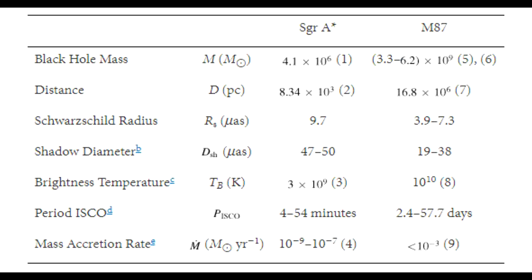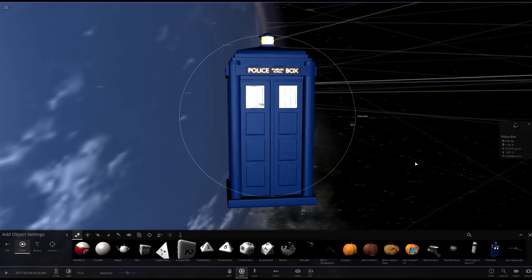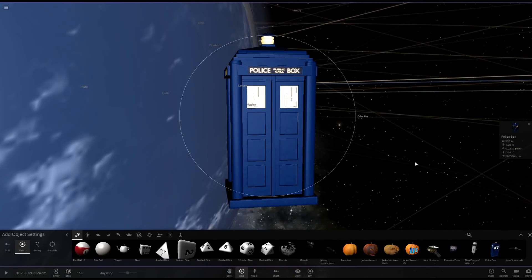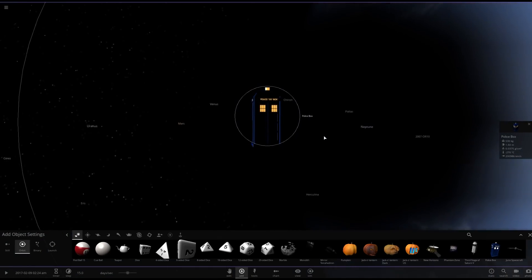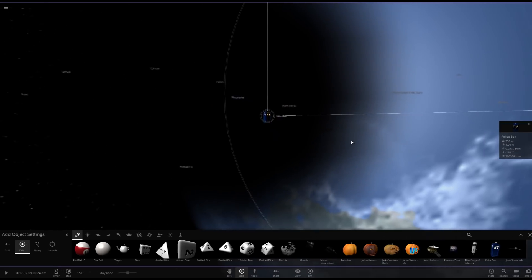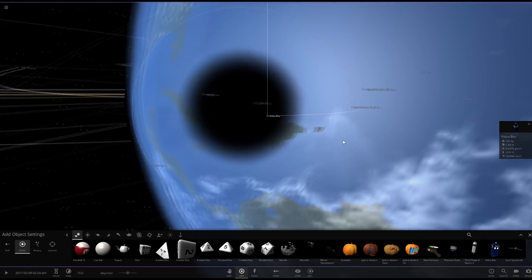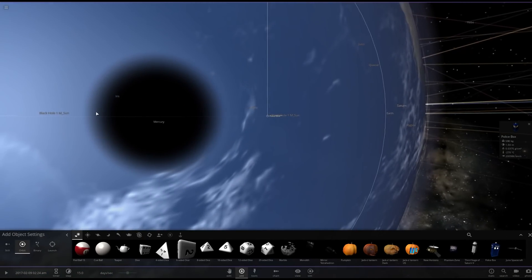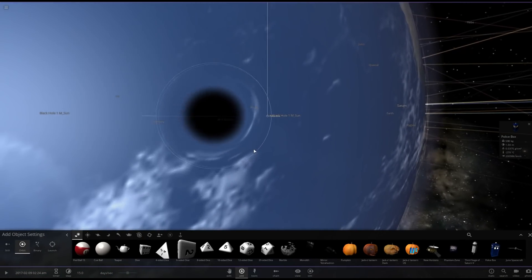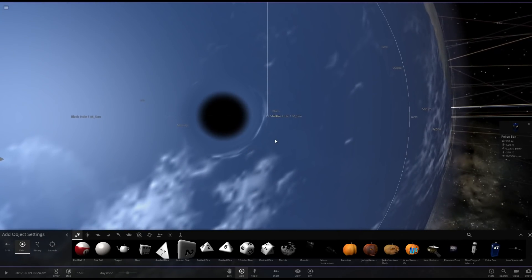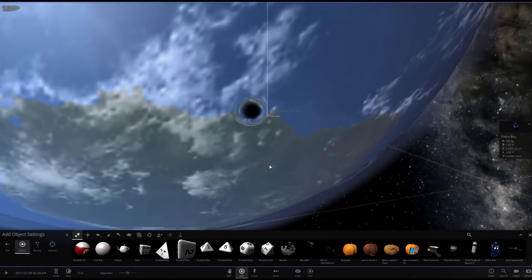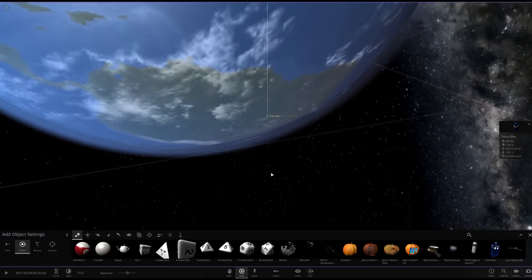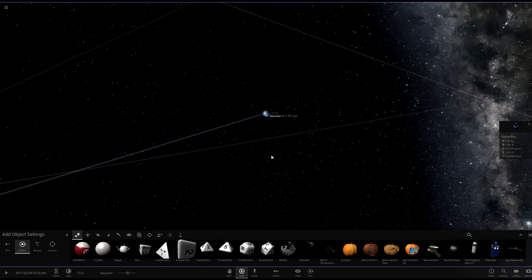To get an idea of how big these black holes are, I can go over to Universe Sandbox to show you. Here we have an industry standard police box for scale, about three meters tall. It is sitting less than 10 kilometers away from a one solar mass black hole, which has a radius of about three kilometers, and that's because the radius of a black hole is defined by its event horizon radius, also known as the Schwarzschild radius, which is proportional to its mass in solar masses. So if you take a one solar mass black hole, it is three kilometers in radius, about six kilometers across.